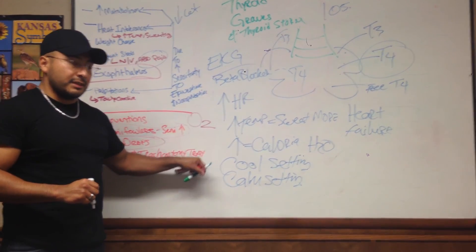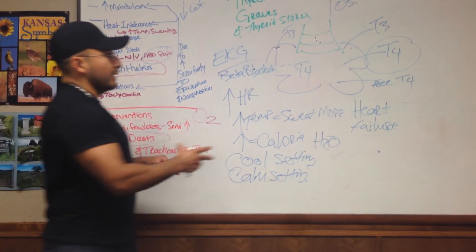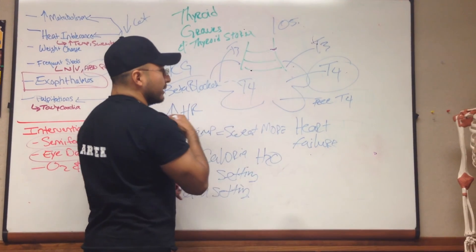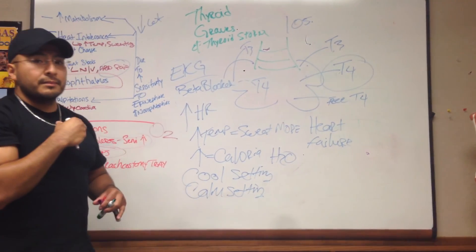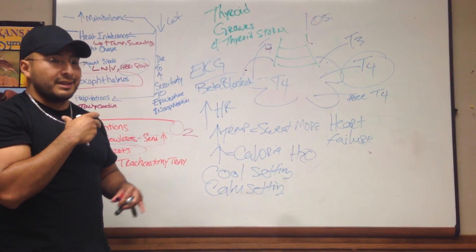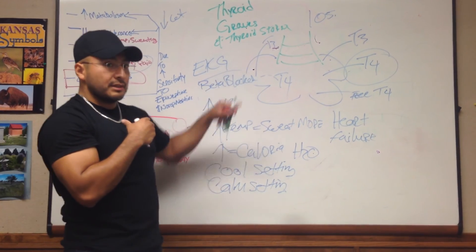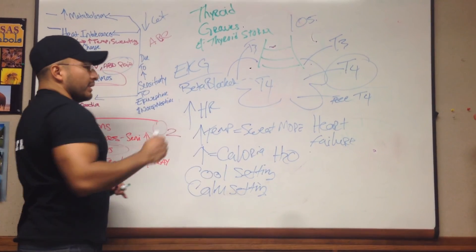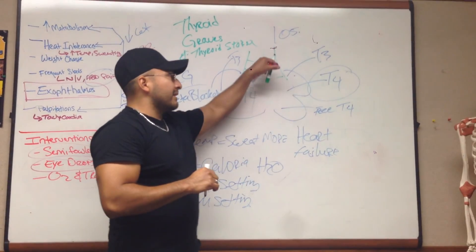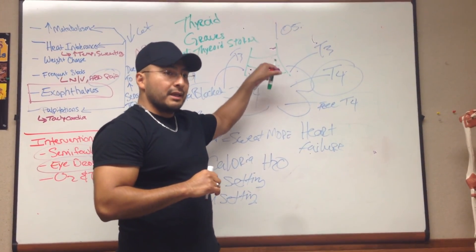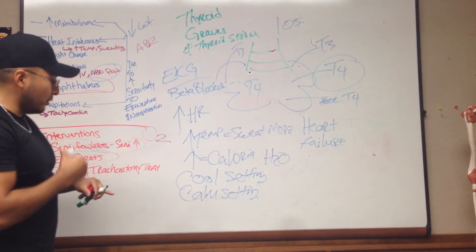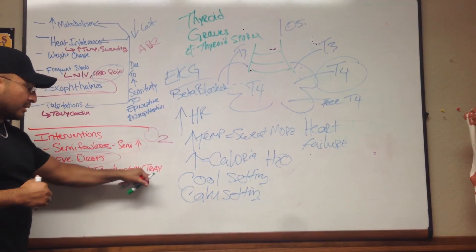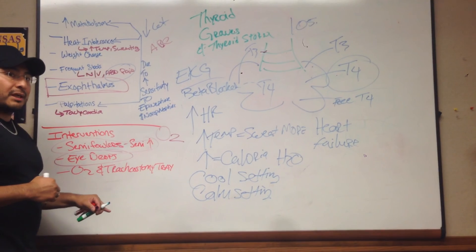Because again, if the thyroid region or the throat region becomes swollen, then that makes it difficult for that patient to breathe. So remember always your ABCs, airway, breathing, and circulation. So you want to make sure that you maintain a patent airway, that they can actually breathe. So in case that does swell, you need to have a tracheostomy tray in the room at all times.